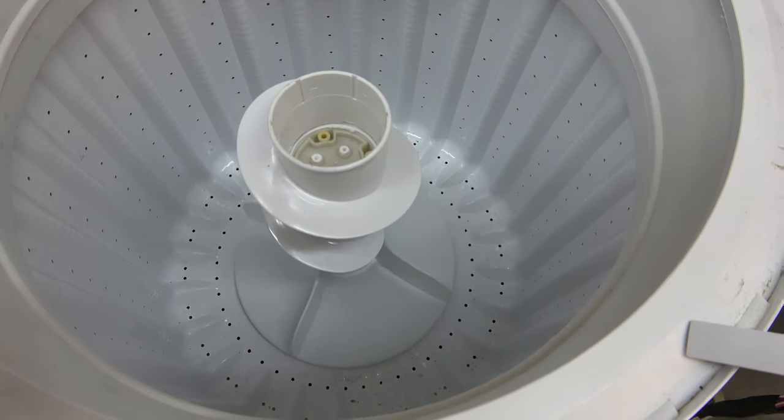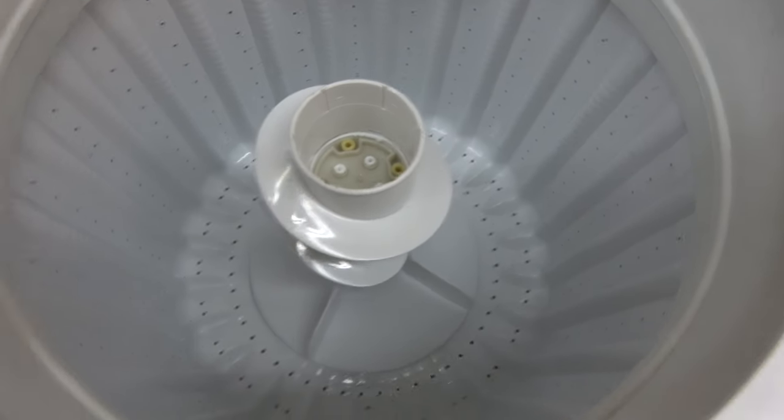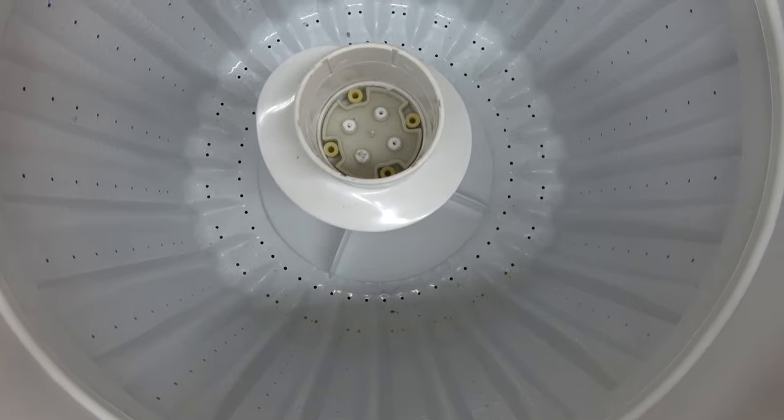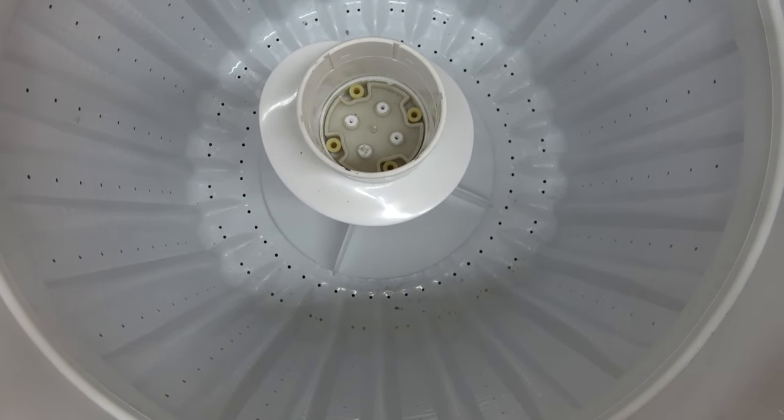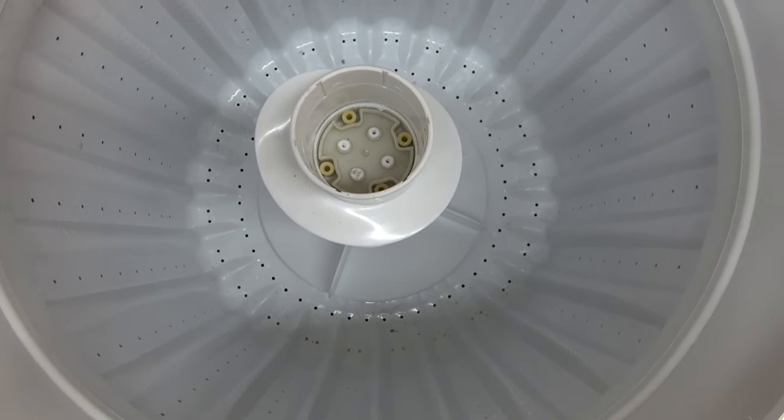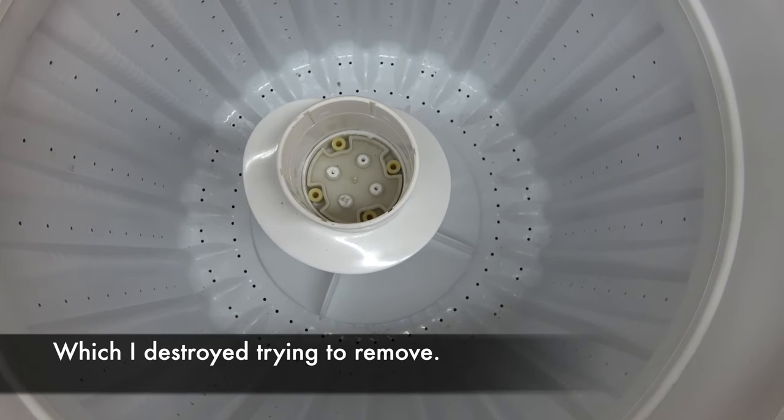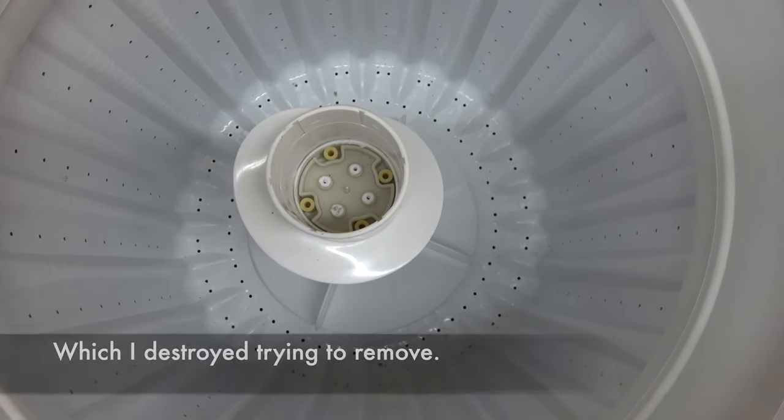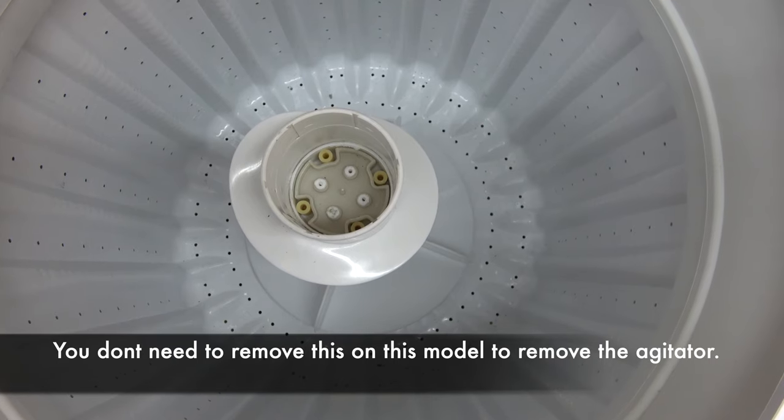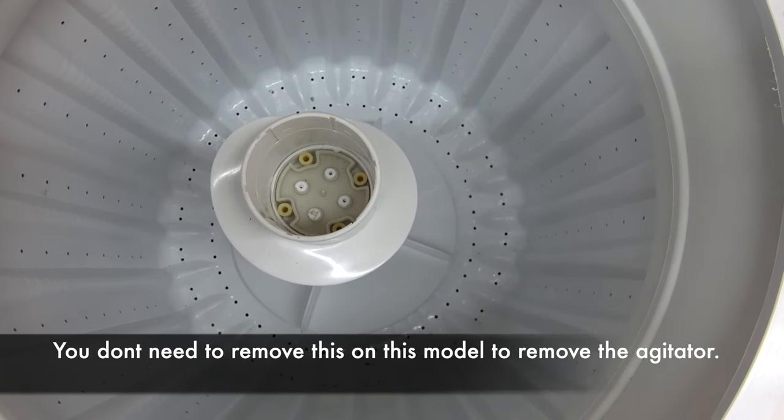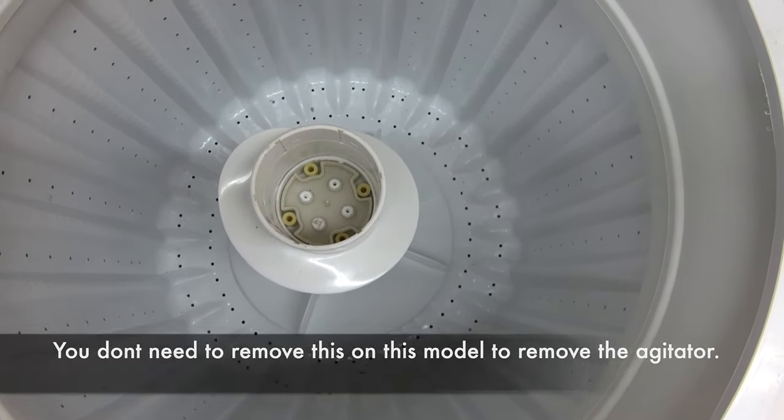You pull that out with a little wiggle, and then there was a dome on top of that. A lot of the other videos indicated you just pull that out and underneath will be a bolt. Put your socket in there, take that nut or bolt off, whichever it may be, and then lift the agitator right out. Well, that's not the case with this Hotpoint.